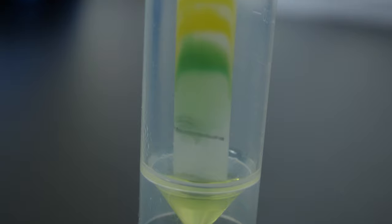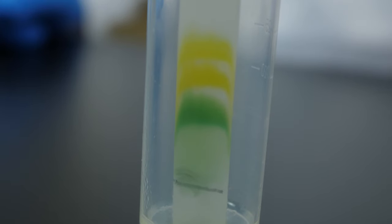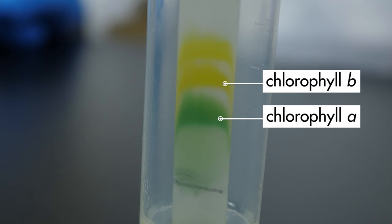After about 45 minutes, we can see three lines of color on the chromatography plate. The green line was made by the chlorophyll A. The first yellow line was made by the chlorophyll B. The second yellow line was made by carotenoids.